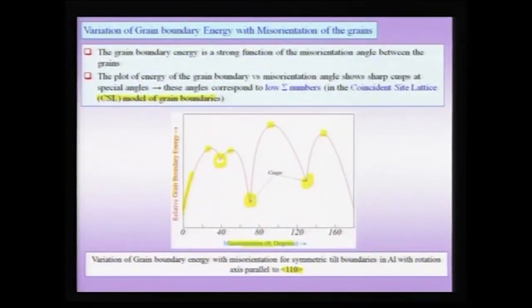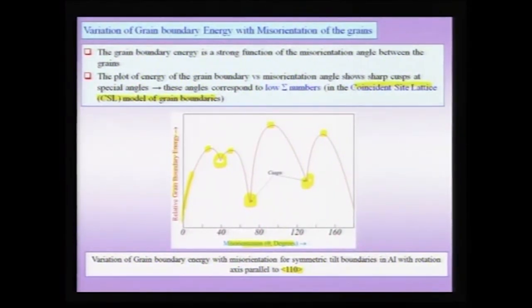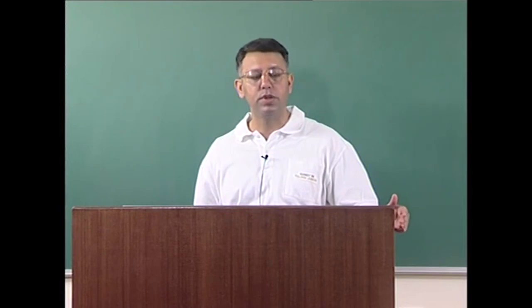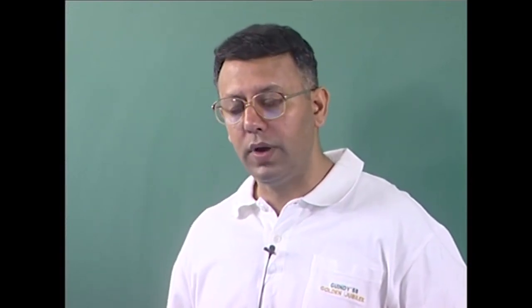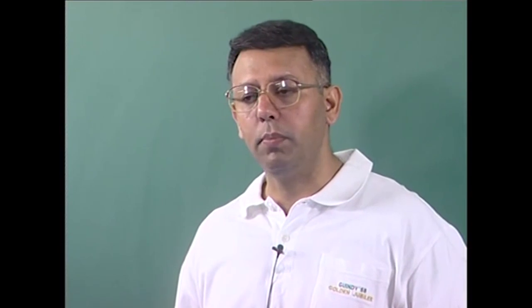We can classify two kinds of special boundaries: those corresponding to cusps and those having a low angle. Therefore, you can have low angle grain boundaries which are special boundaries, and those high angle grain boundaries with relatively lower energy corresponding to the coincidence site lattice concept. This grain boundary energy is a very important quantity in the behavior of the material because it determines how much segregation will occur or how fast grain growth will occur during an annealing or high temperature process.